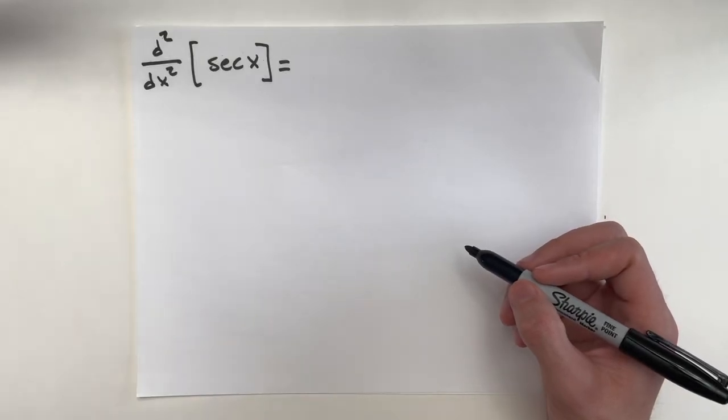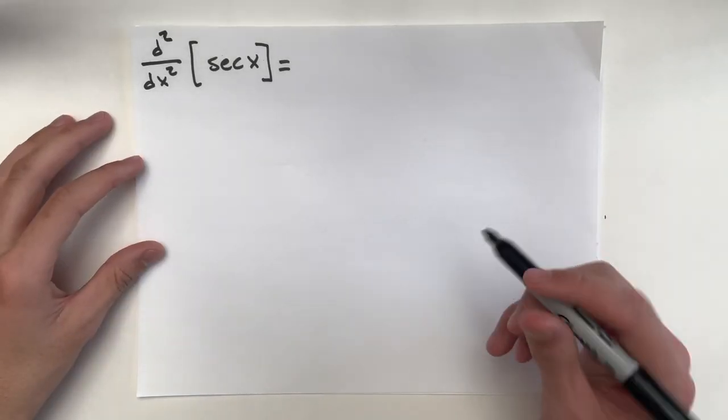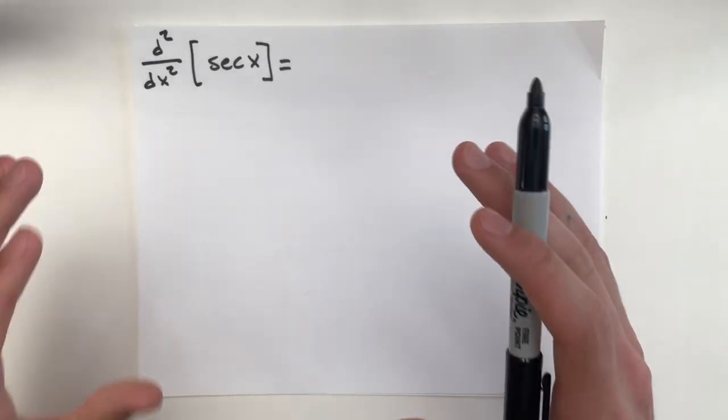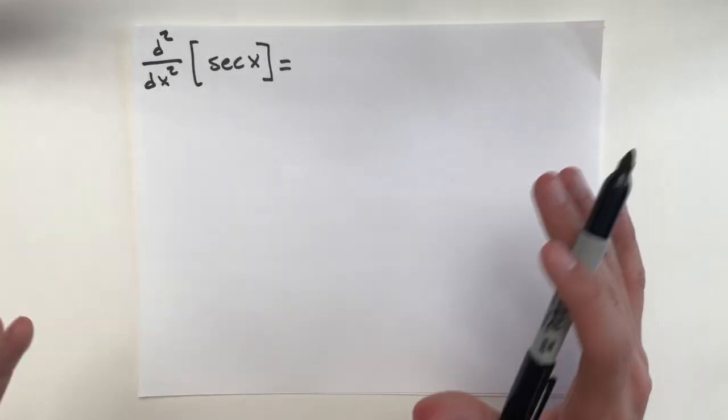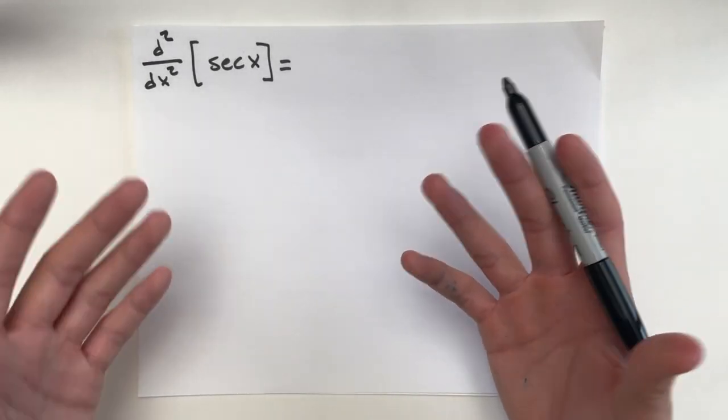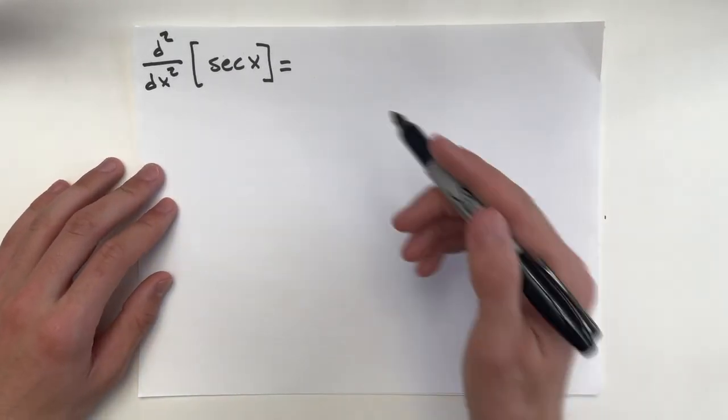Alright, the second derivative of secant x. I really like this problem because it uses elements of trig, and eventually, as you'll see, we'll have to use the product rule.